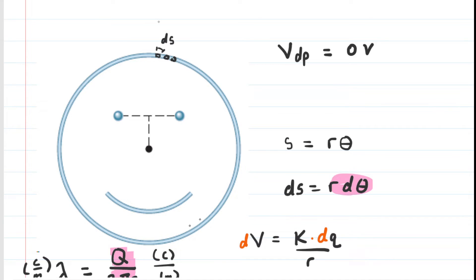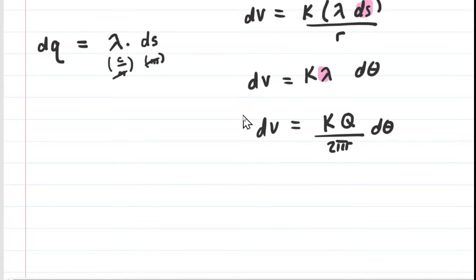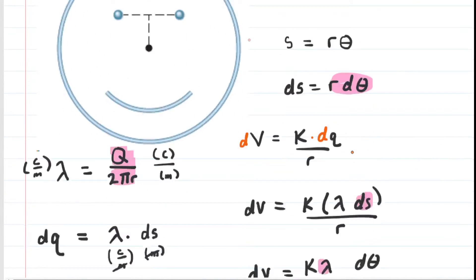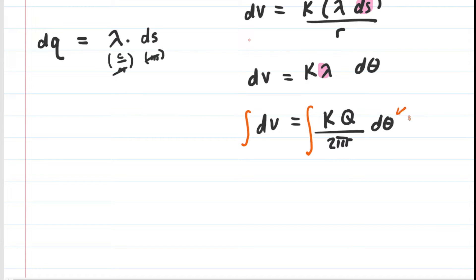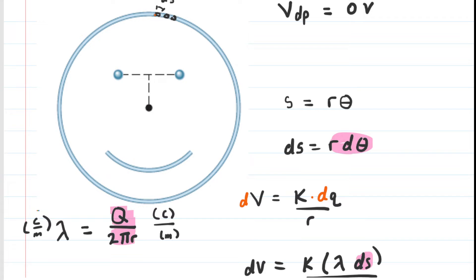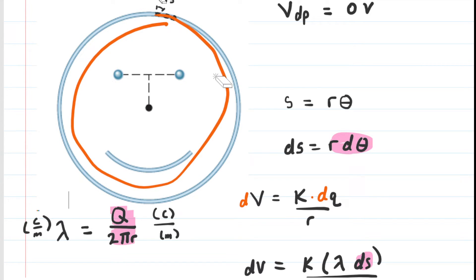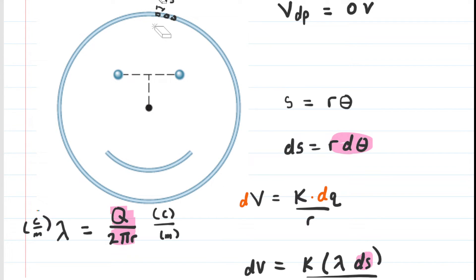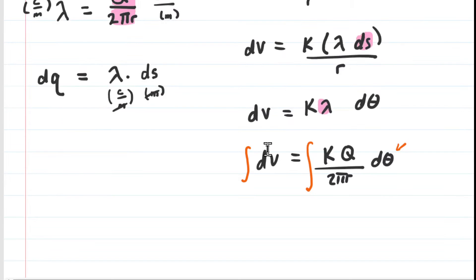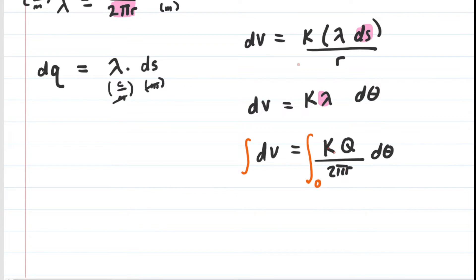If we take tiny arcs all the way around the ring, we want the electric potential produced by every single one of those tiny arcs — and there are an infinite number of them. So to add an infinite number of electric potentials, we integrate. We integrate both sides of the equation, summing the potential contributions from all the tiny charged arc lengths along the outer ring. We need bounds: our variable is theta, an angle. Integrating all the way around the ring means going from zero to 2π radians.